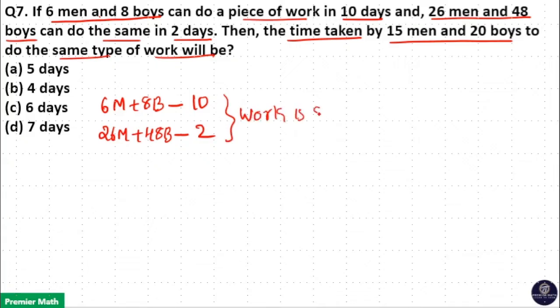So equalize it: 6 men plus 8 boys can do a job in 10 days and the same work can be done by 26 men and 48 boys in 2 days.